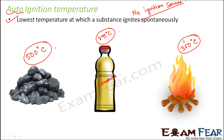Auto-ignition temperature also indicates the combustibility of a substance. A substance which has a higher auto-ignition temperature will not catch fire easily. For example, if you compare coal and wood — if you heat both, which will catch fire faster? Wood, because as soon as wood reaches 300 degrees Celsius it will catch fire, but for coal it can go beyond 300 and up to 500 degrees Celsius.